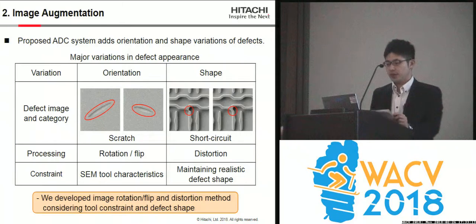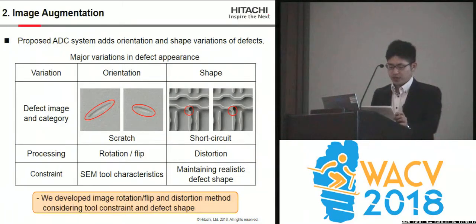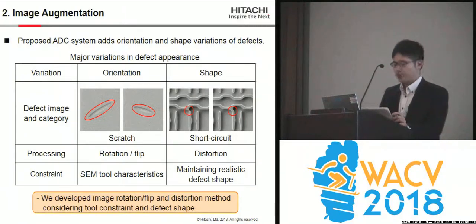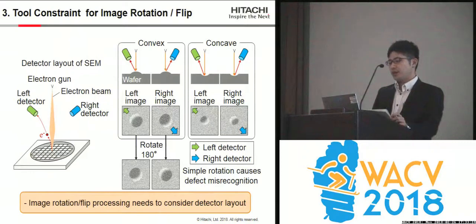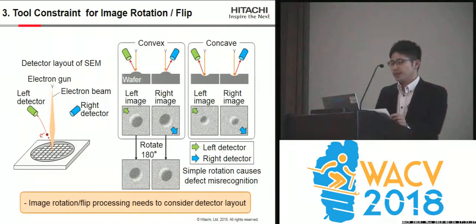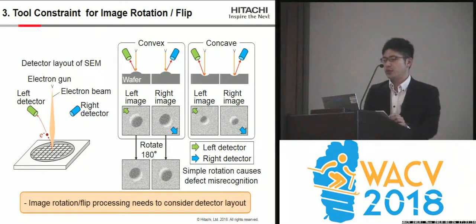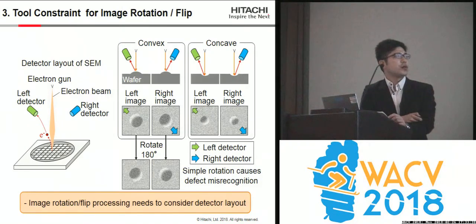In this presentation, I explain only the tool constraint in the rotation and flip processing because of the time constraint. SEM images are formed by scanning the surface with an electron beam and detecting electrons emitted from the surface with two detectors, left and right.